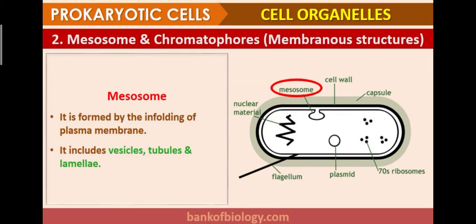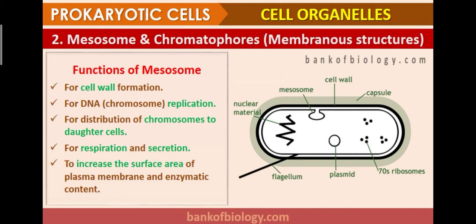The second organelle is the mesosome, a membranous structure present in prokaryotic cells. It is formed by the infolding of the plasma membrane and includes vesicles, tubules, and laminae. Functions of mesosomes include: helping in cell wall formation, DNA replication, distribution of chromosomes to daughter cells, respiration and secretion of cells, and increasing the surface area of the plasma membrane and its enzymatic content.